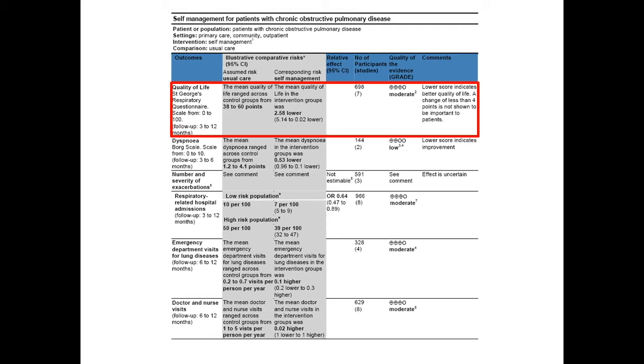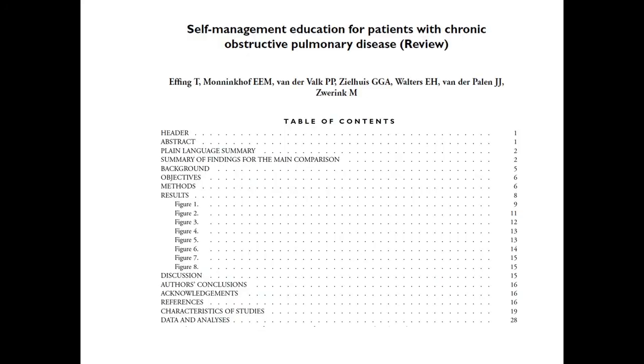For each outcome, the table includes the results or the magnitude of the effect, and the assessment of the quality of evidence using the GRADE approach. Remember also that one summary of findings table is featured at the front of a Cochrane review, which usually describes the main comparison of the review. Other summary of findings tables describing other comparisons in the review can be included under additional tables.